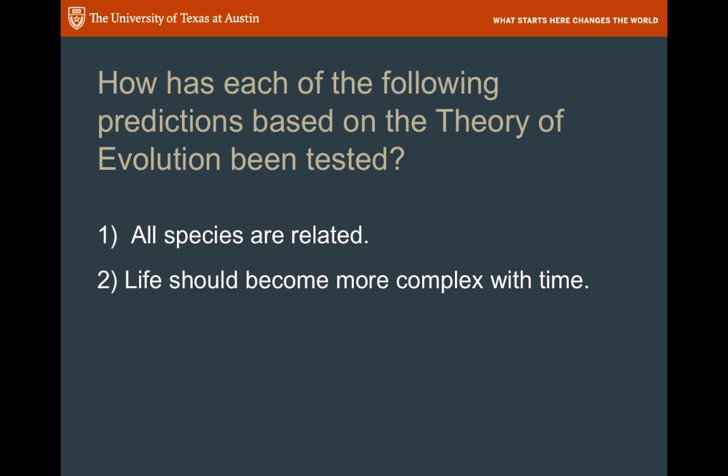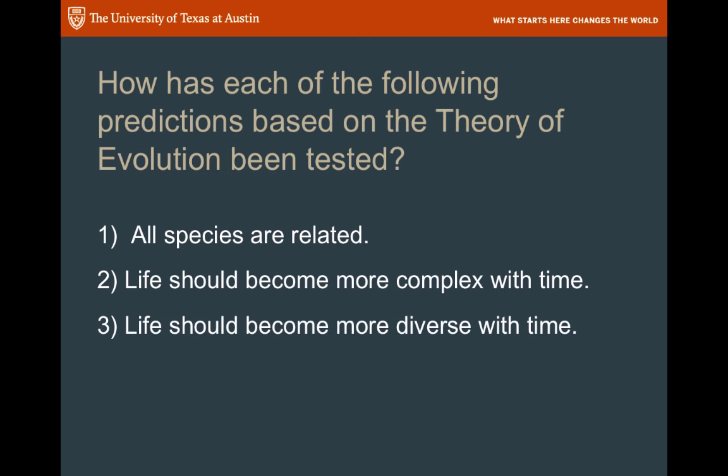Another obvious prediction from the theory of evolution: if things descend and modify to adapt to changing environments, then life should be getting more complex through time. And in fact you can see that in the fossil record — from single-celled organisms to multi-celled, to soft-bodied creatures, to hard-bodied creatures, to fishes and vertebrates and things with legs and land animals. Also, life should become more diverse with time, and that shows up in the fossil record as well.